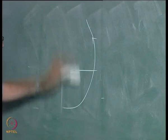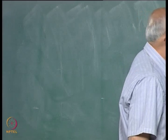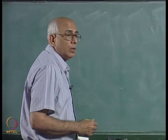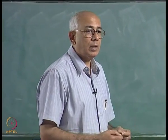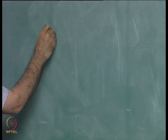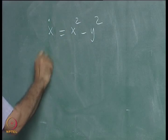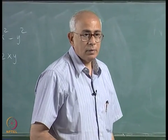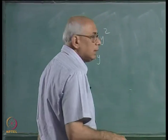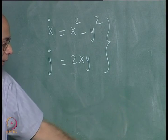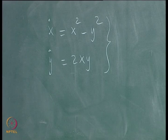Let us go on to the next topic: we were looking at higher order critical points. I made the statement that these higher order critical points are generally formed by the coalescence of simple critical points — we saw this in the case of a saddle-node, how a bifurcation occurs and you get a higher order critical point at the point of an exchange of stability bifurcation. Now let us look at further examples: consider x-dot equal to x²-y² and y-dot equal to 2xy.